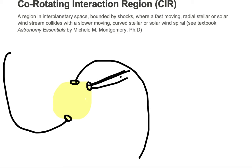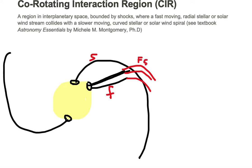And where the two collide is going to generate some shocks. So you're going to start pushing the wind in the direction of the radial portion, which is the fast-moving — I'll label that with an F. The slower-moving one is going to get pushed by the fast-moving one, so you're going to generate this region that is bounded by shocks. You have your forward shock on the front side and your reverse shock on the back side.